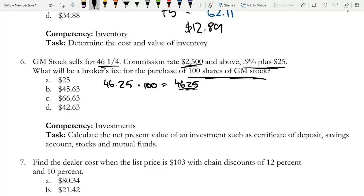Now on this $4,625, this does satisfy the requirement. It is over $2,500, so this is greater than $2,500. So you're going to earn this 0.9% commission plus the $25.